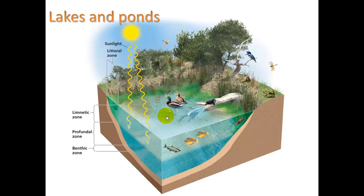So lakes and ponds — let's take a look. We see the different zones: the littoral zone along the edge, where you have a lot of vegetation supporting all sorts of insect life, birds, and bugs. A lot of amphibians hang out here, so there's lots of biodiversity.